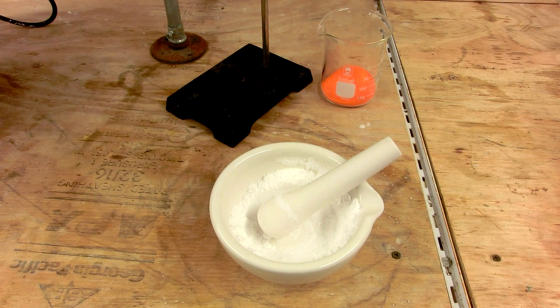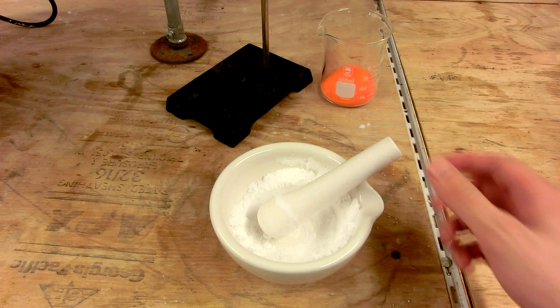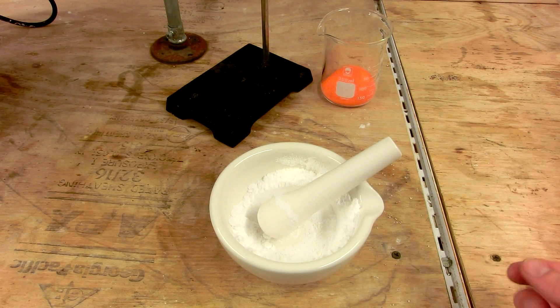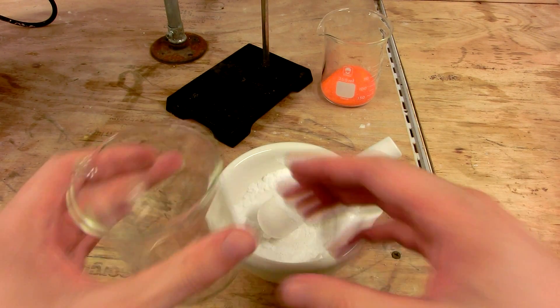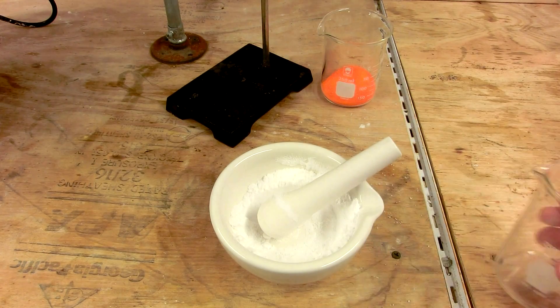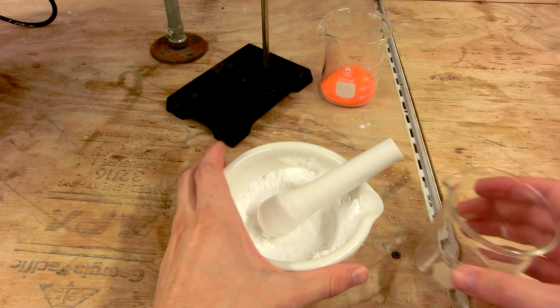Once you get the salt crushed as finely as you can get it, and I prefer to buy flake salt because it crushes much easier than granular salt, you can transfer it into a separate container so you can then crush the potassium dichromate.